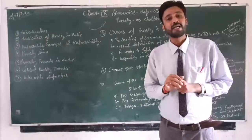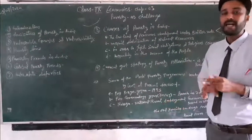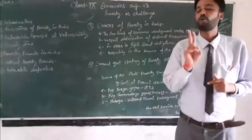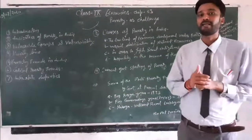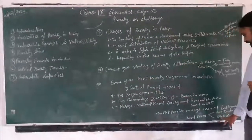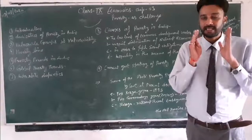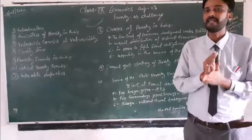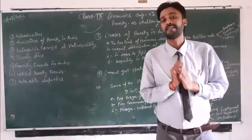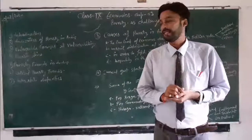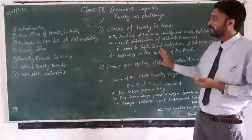NREGA, also known as Mahatma Gandhi Rashtriya Gramin Rojgaar Guarantee Yojana, was converted and launched in 2005 by the central government. It was initially implemented in 200 districts of India, later expanded to all 600 districts. Under this scheme, all BPL — Below Poverty Line — families are guaranteed at least 100 days of employment per year.